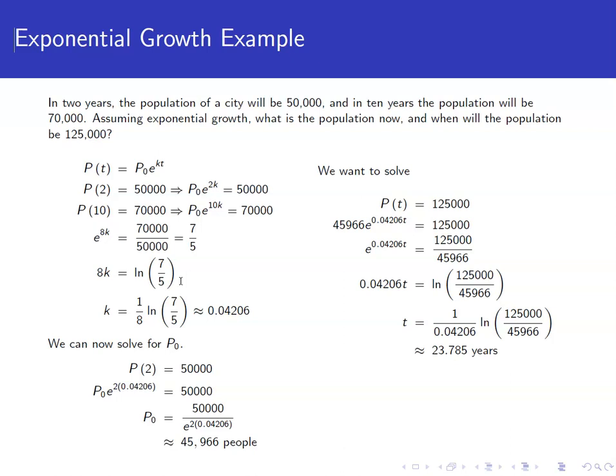Now we can figure out what P₀ is. We know that when we plug in 2, we're supposed to get 50,000. So P₀e^(2×0.04206) = 50,000. We divide by that e to that power, plug that into our calculator, and we get about 45,966 people as the current population.